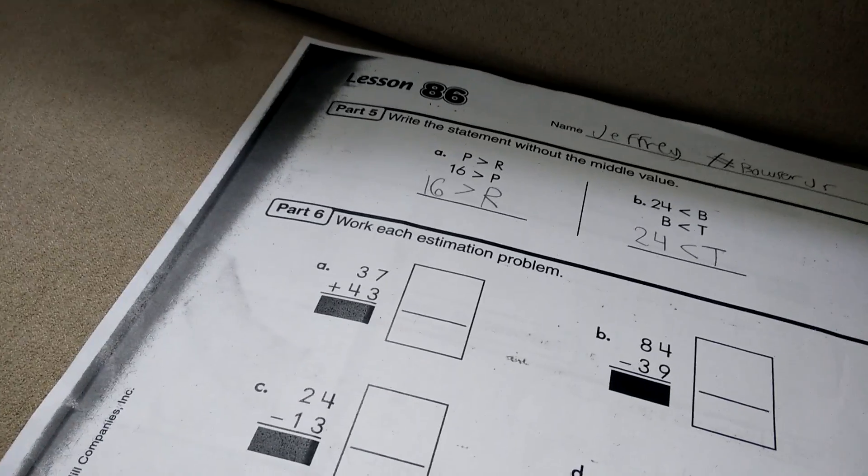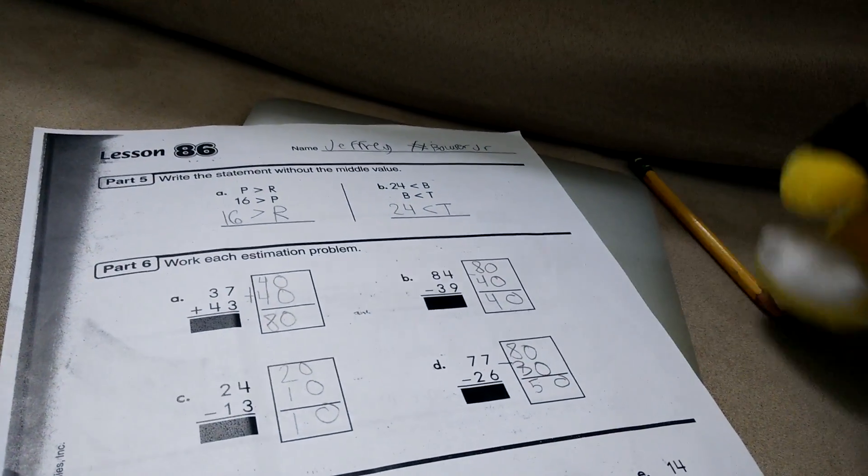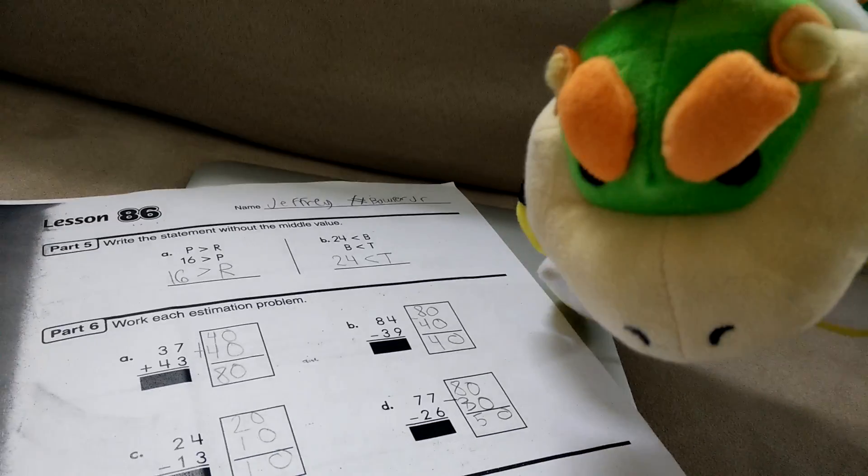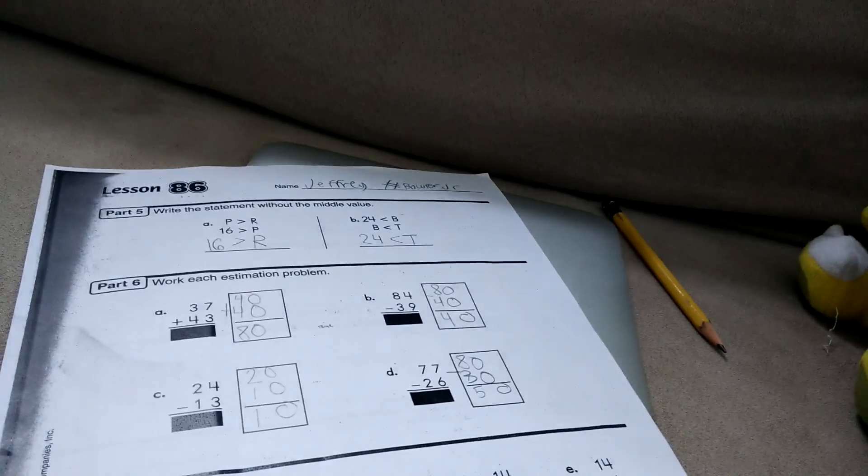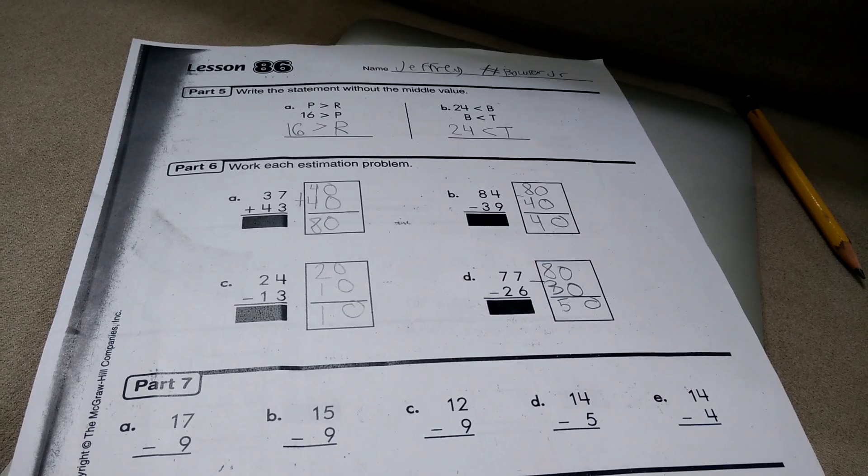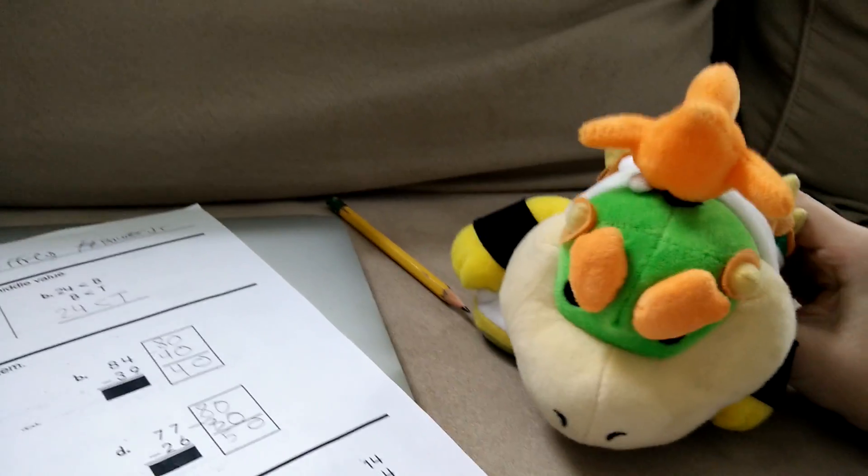All right, now it's time for part six. Work each is a problem. This is easy. All you need to do is find a question of the number. 40 plus 40 equals 80, right? 80 minus 40 equals 40. Not 80. Like Jeffy said, 8 minus 4. 8 minus 4 is 8. You take it to 4. No, he's wrong. 40. 20 minus 10 is 10. 10 minus 10 is 10.